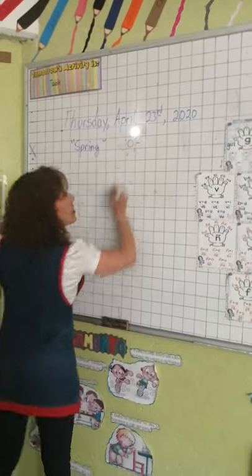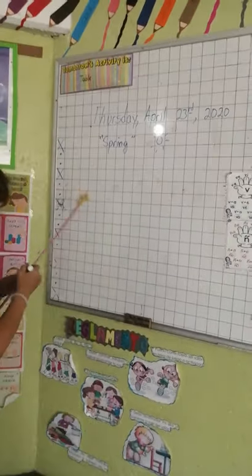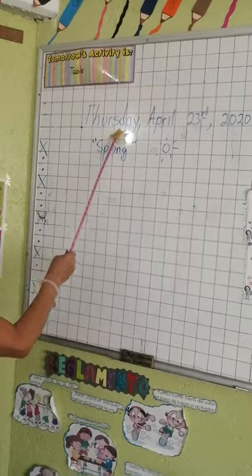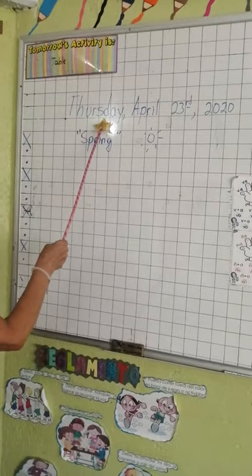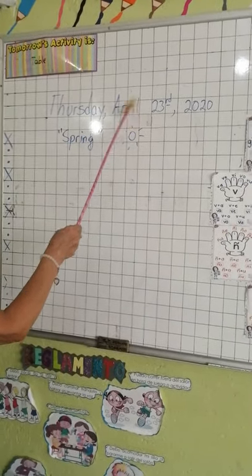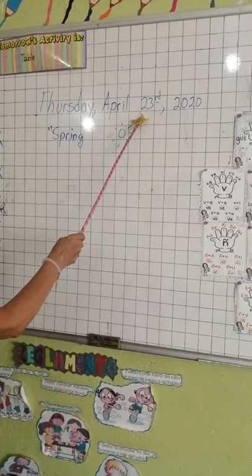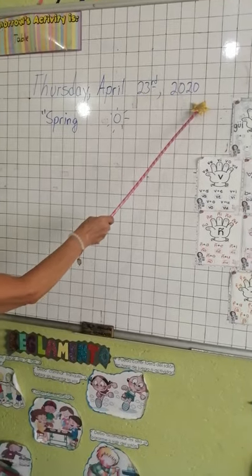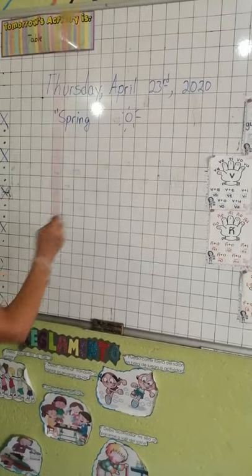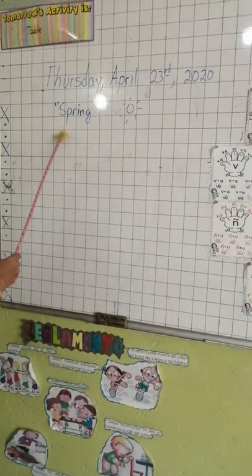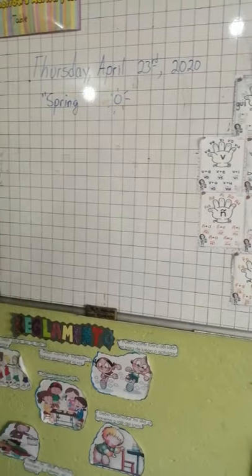So, let's repeat the date. Everybody say after me: Thursday, April 23rd, 2020. It's spring and it's a sunny day.